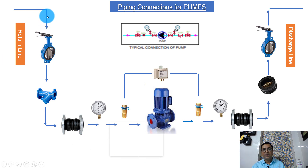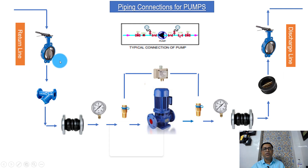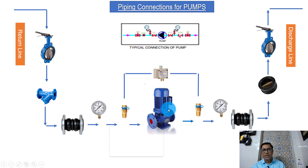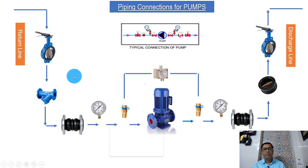When we get a return line that is coming from the AHUs of the building, let us look at this return line which is coming in. The first thing that comes in is a butterfly valve — these are the isolation valves. So if you want to do any maintenance here, these butterfly valves are important. So first on the return line, we get a butterfly valve.